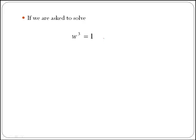Imagine that we are asked to solve w to the 3 equals 1, which is a cubic equation with unknown w. We all know how to get one of the answers. If we just take the cubic root on both sides of the equation, we would come up with w equals 1, and that is one of the solutions.